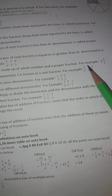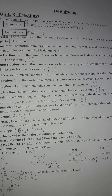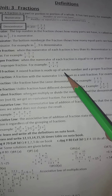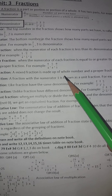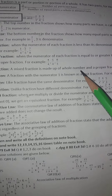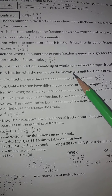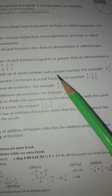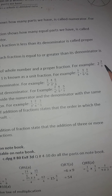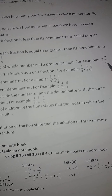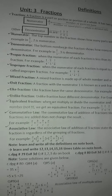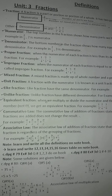Mixed fraction: a mixed fraction is made up of a whole number and a proper fraction. Whole numbers start from zero onward. When the numerator is less than the denominator in the fractional part, combined with a whole number, it is called a mixed fraction.